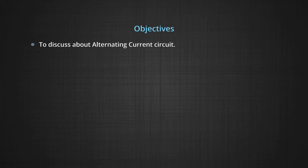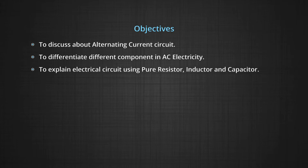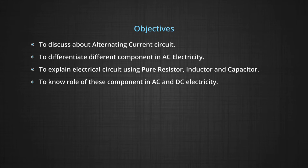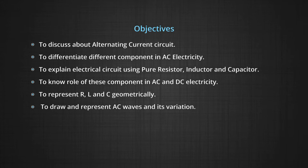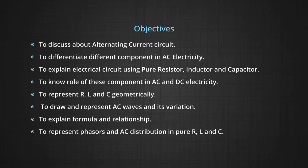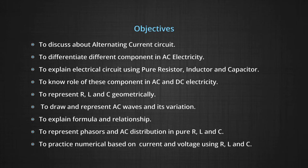Our objectives for this module are to discuss alternating current circuits, differentiate different components in AC circuits, explain electrical circuits using pure resistor, inductor, and capacitor, and to know the role of those elements in AC and DC. We will also represent R, L, and C geometrically, draw AC waves, explain formulas and relationships, represent phasors, and practice numerical problem solving.